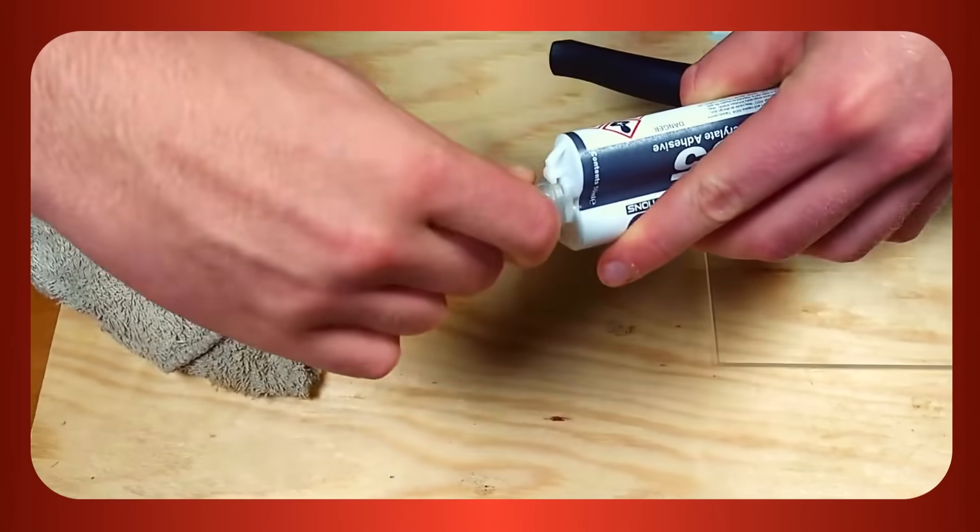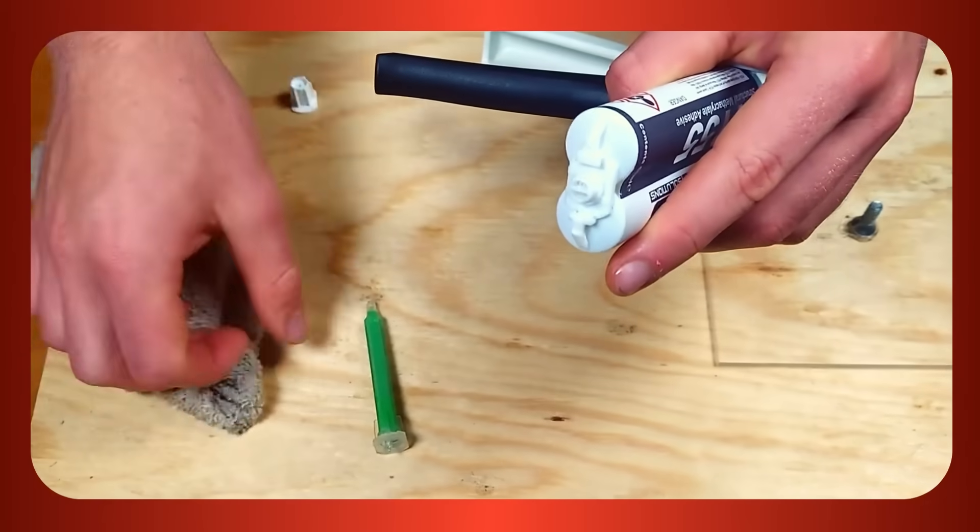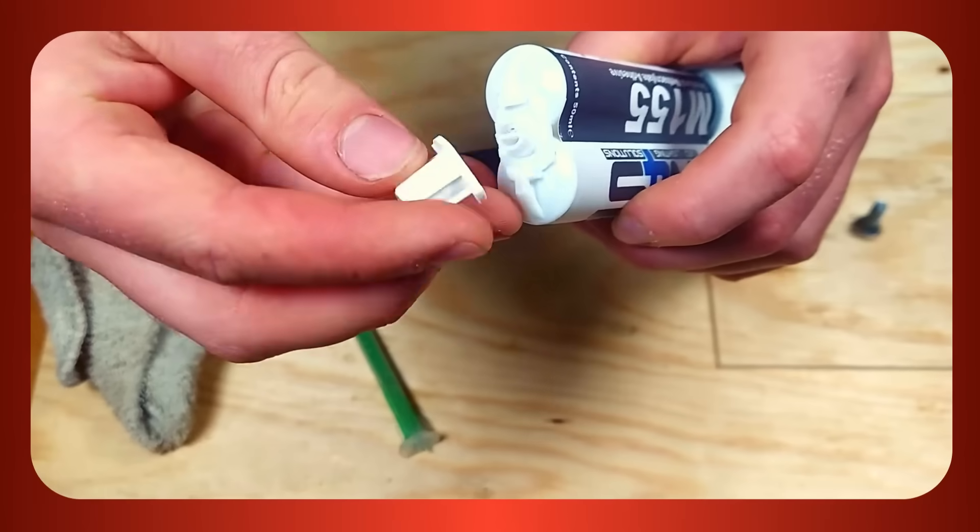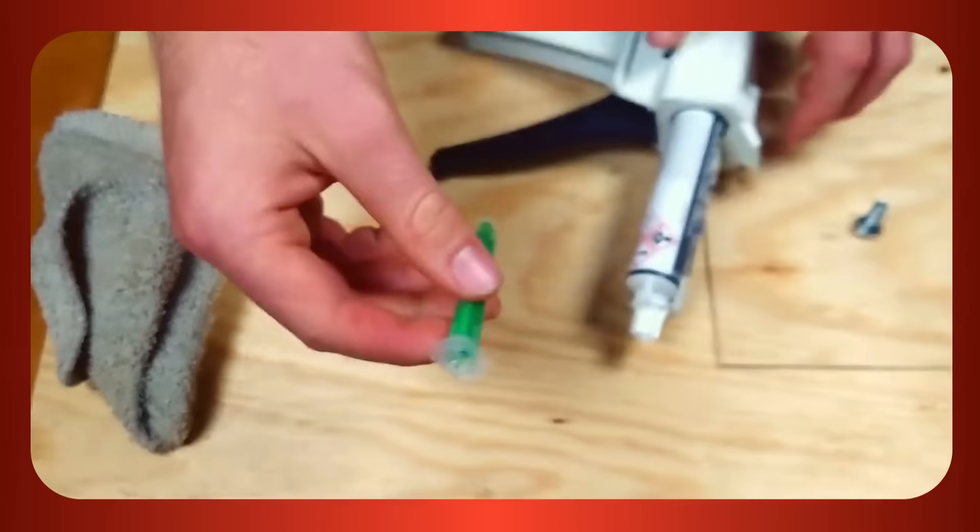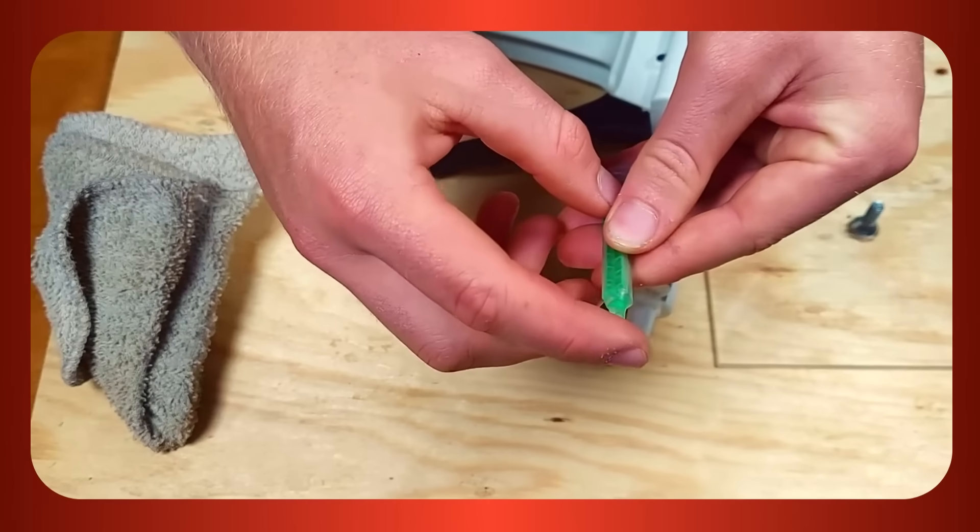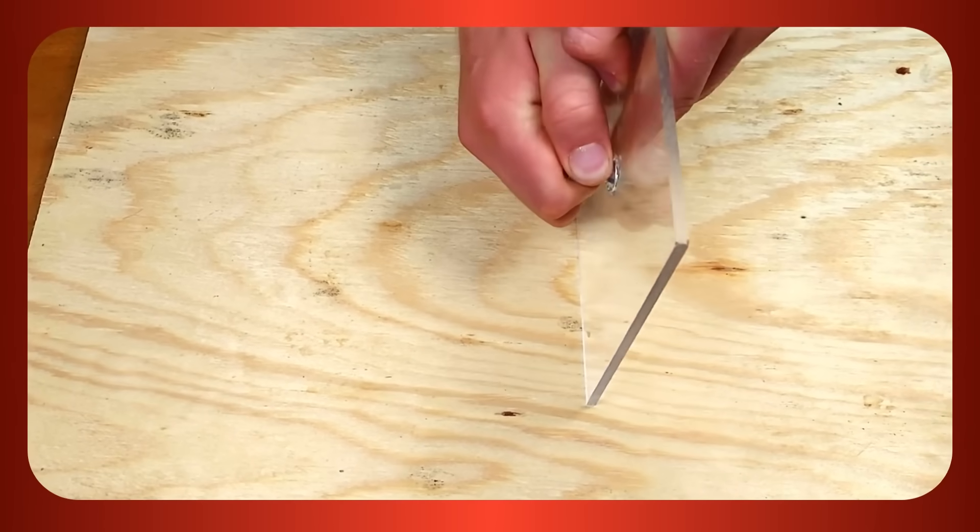When you're done, remove the mixer and wipe off any excess glue, then replace the original cap. Because the partial set time is only a matter of minutes, when the glue is not kept flowing out of the nozzle it will harden and the mixer will be rendered unusable. A little forward planning before gluing can help to minimize the waste.